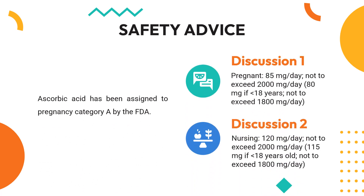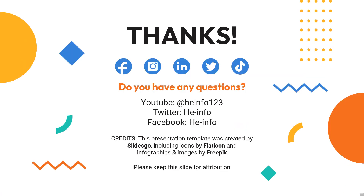Safety advice: Ascorbic acid has been assigned to pregnancy category A by the FDA when used in doses advocated by the FDA. Doses exceeding the recommended dietary allowance (RDA) have been assigned to pregnancy category C. That's all the information about ascorbic acid we collected. Thanks for listening. Don't forget to like, share, and subscribe to the HeInfo channel if you like this video to get more health information updates.